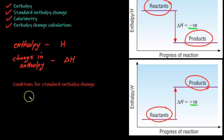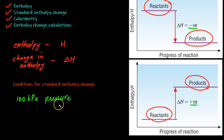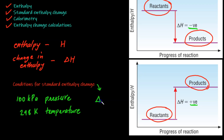By convention, delta H has a negative value for exothermic reactions and a positive value for endothermic reactions. Standard enthalpy changes are normally measured under standard conditions of 100 kilopascals pressure and a temperature of 298 Kelvin, denoted by the symbol delta H with a small circle and dash.